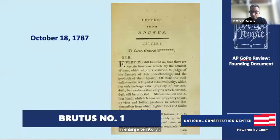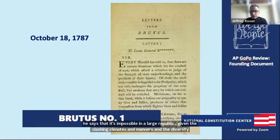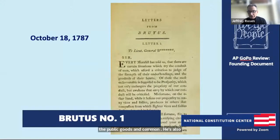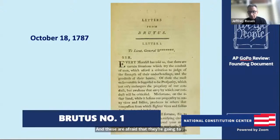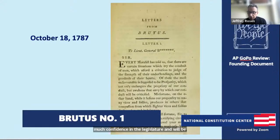Brutus is also really worried about standing armies, common to European monarchies, and afraid they'll oppress the people. He's worried that in a large republic, the people won't have much confidence in the legislature and will be jealous of the laws they pass. With a concentration of power in the hands of a few, representatives will be removed from the control of the people and will abuse their power. It's a really interesting question — was Brutus right or not?